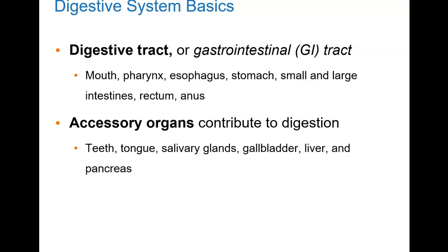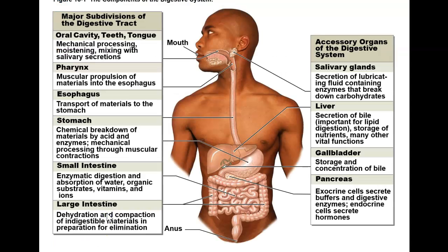And then there are the accessory organs, which contribute to digestion — usually by the secretions that they dump into the GI tract — but food doesn't actually go through them. If we look at a diagram, you can see on one side are the organs of the GI tract, and on the other side are the accessory organs.